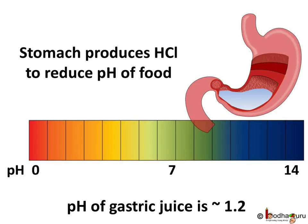In human beings, the stomach produces acid to lower the pH of food. Many enzymes require a lower pH to function. The gastric juice secreted by the stomach has hydrochloric acid (HCl) as its main constituent, and it has a pH of about 1.2, making it acidic.